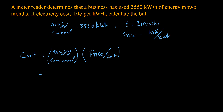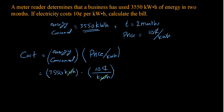The energy consumed needs to be in kilowatt hours, which is already given here — 3550 kilowatt hours. The price is 10 cents per kilowatt hour. The kilowatt hour units cancel each other, giving me 35,500 cents. Converting that into dollars gives me 355 dollars.